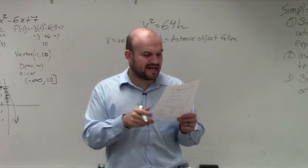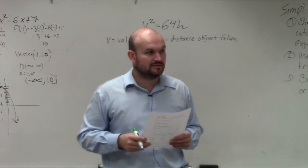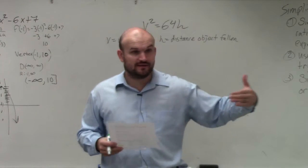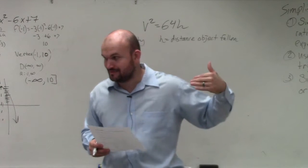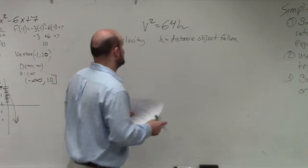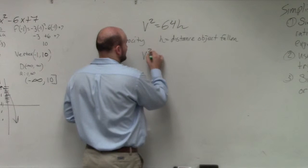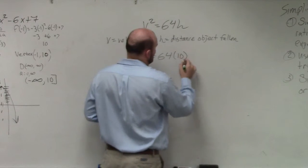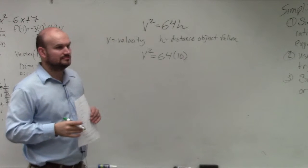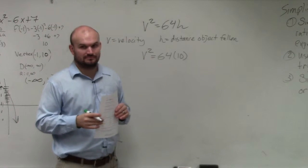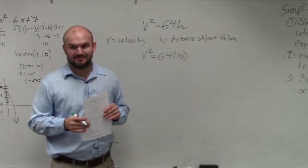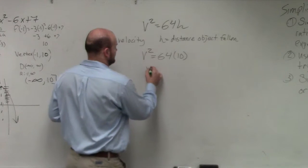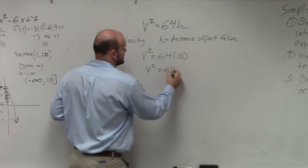And then it says after the object, after a 10-foot fall. So it's saying the object has fallen 10 feet. Which variable does that represent? h. So is it okay for me to go v squared equals 64 times 10? That makes sense. v squared equals 640.